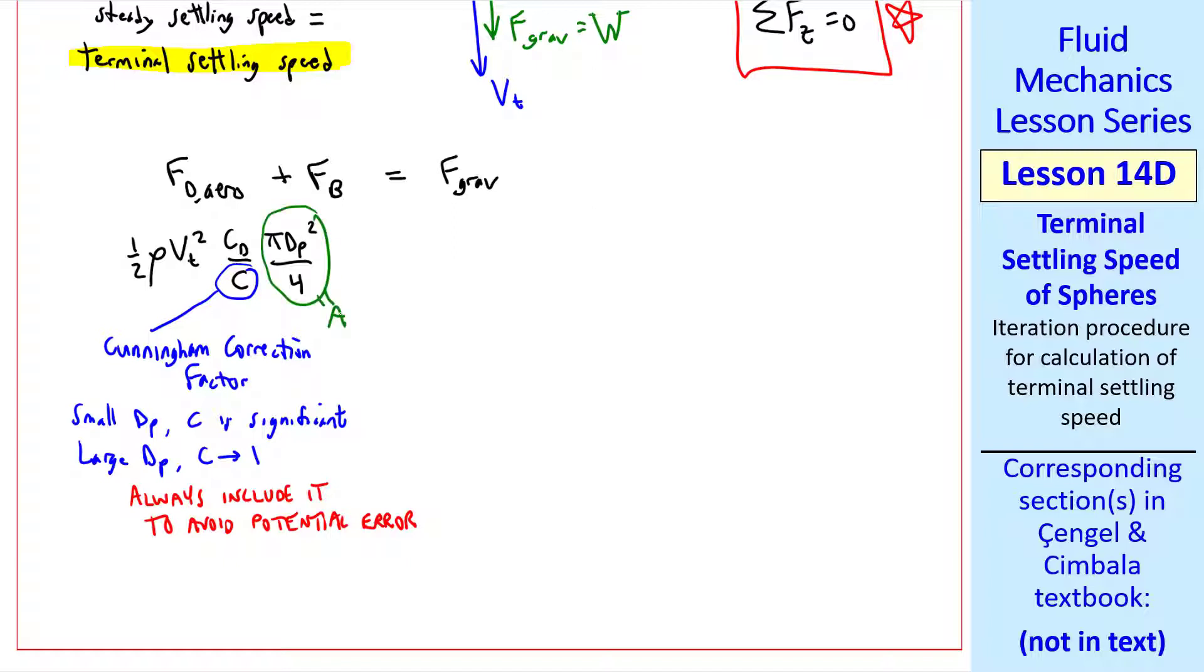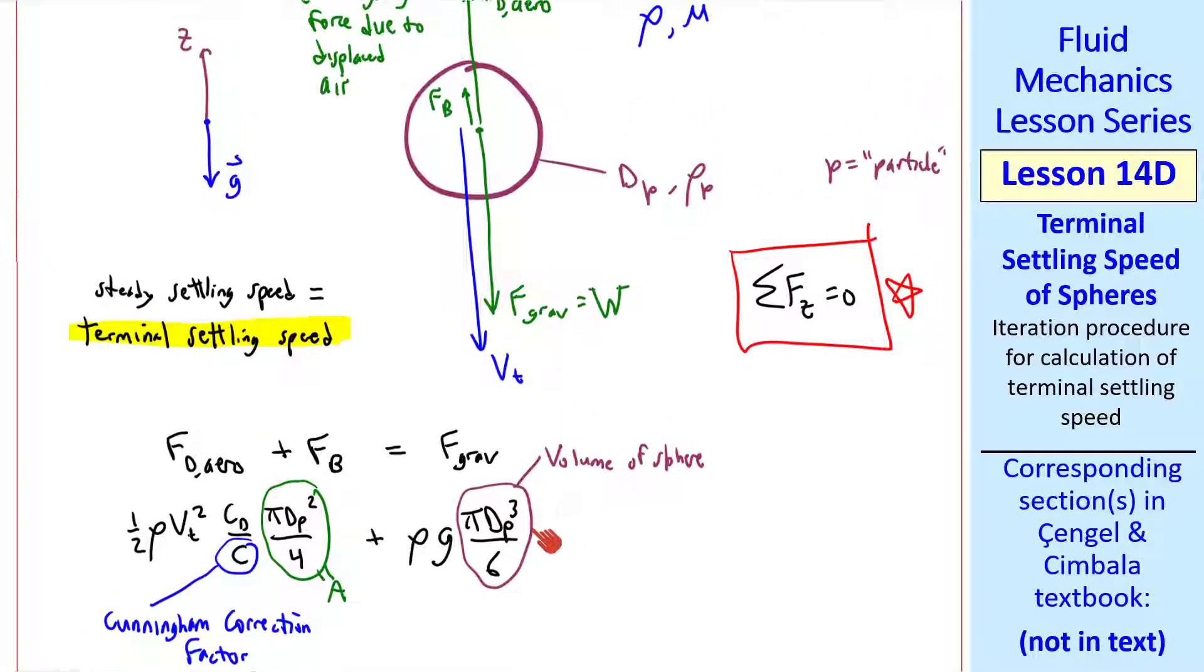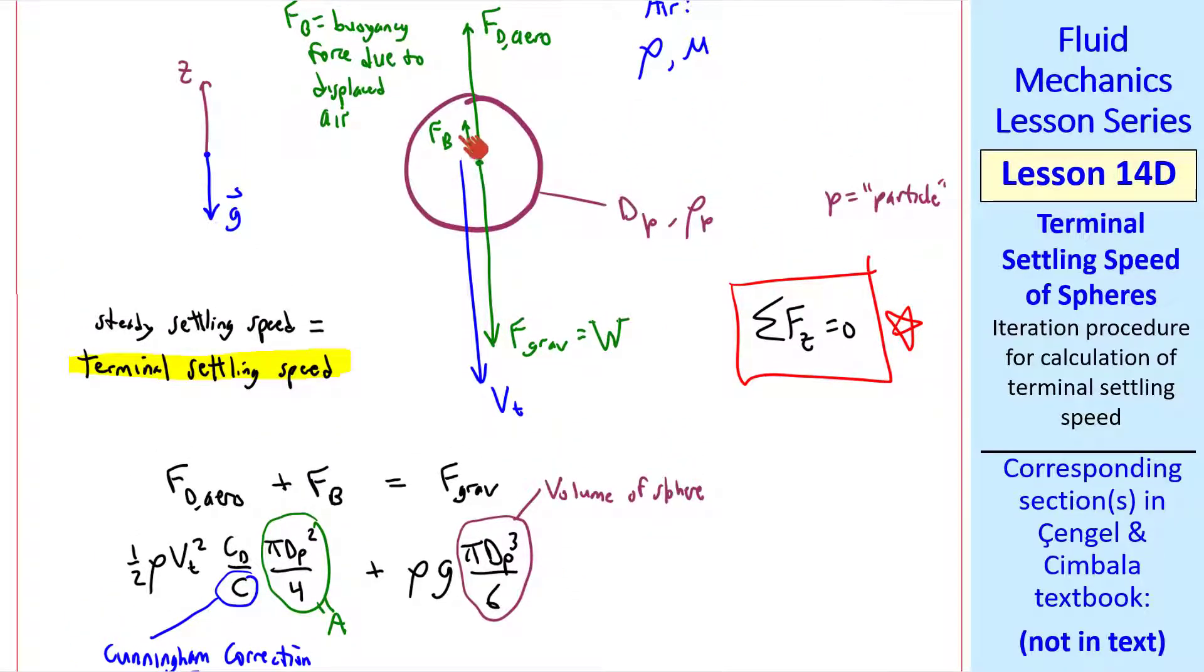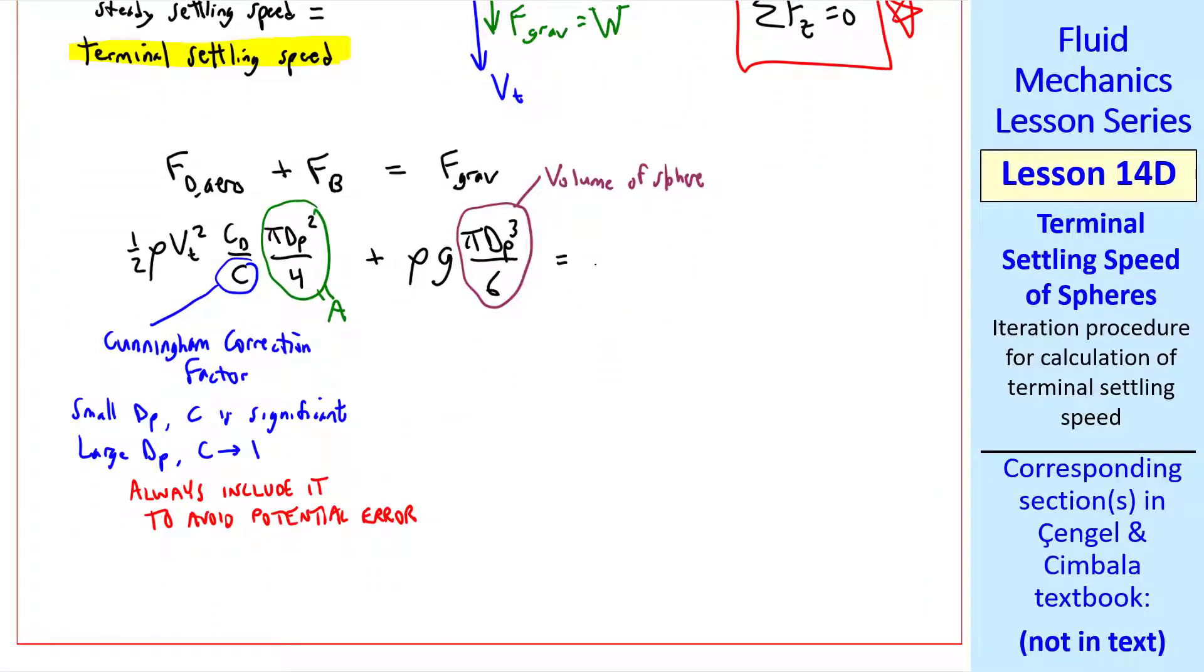This is the projected frontal area of the sphere. The buoyancy force is the density of the air times g times pi dp cubed over 6, which is the volume of the sphere. This term is the displaced weight of the air, which acts as a buoyant force upward. Finally, the gravity term has the same form as the buoyancy term, but with rho p instead of rho.